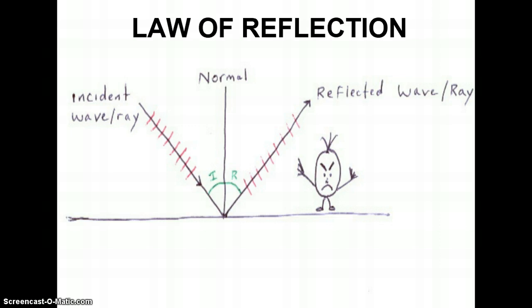Anytime they hit a barrier through which they cannot pass, waves will bounce off. You can try this at home with your TV remote control and a mirror. You can bounce off mirror at your TV using the Law of Reflection.